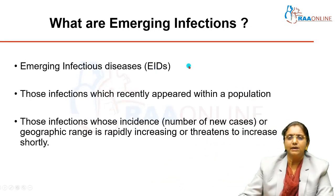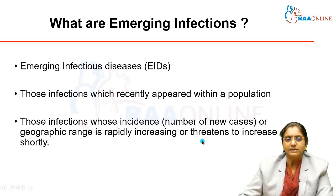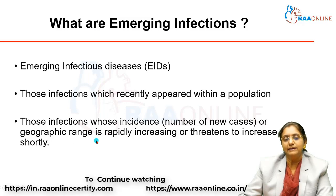Now let us see what emerging infections or emerging infectious diseases — in short, EIDs — are. These are infections which have recently appeared in a population and whose incidence, meaning the number of new cases, is increased; or their geographic range is increasing, spreading from one particular area to other areas; or the number of cases is rapidly increasing or threatens to increase shortly. In these conditions, it is called an emerging infectious disease.